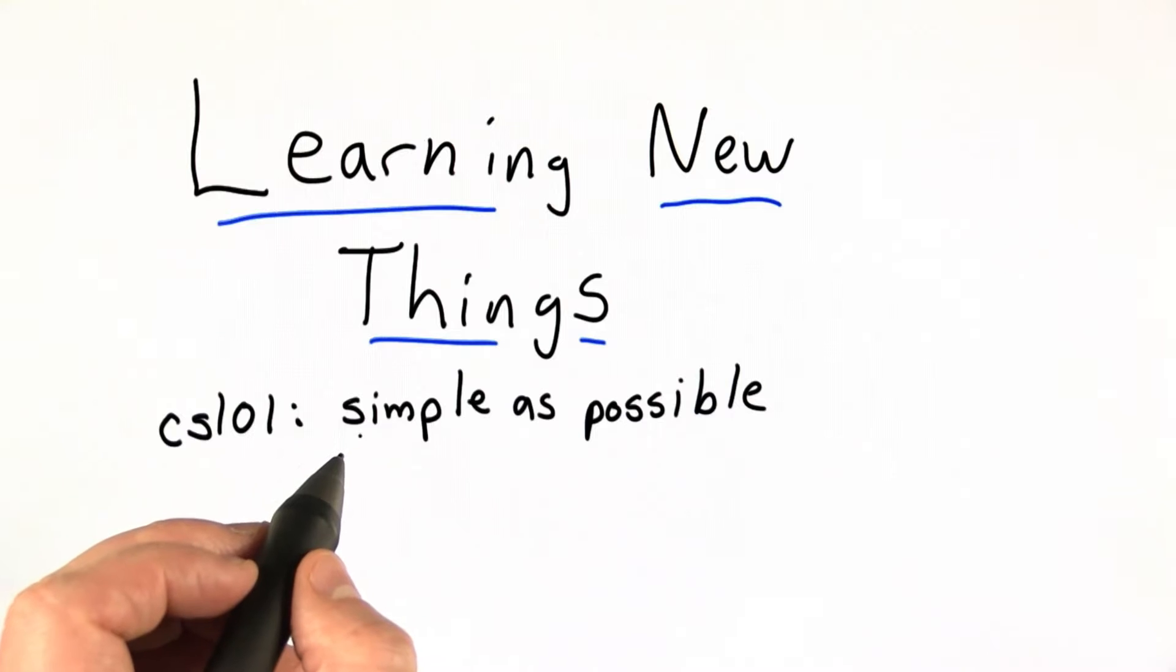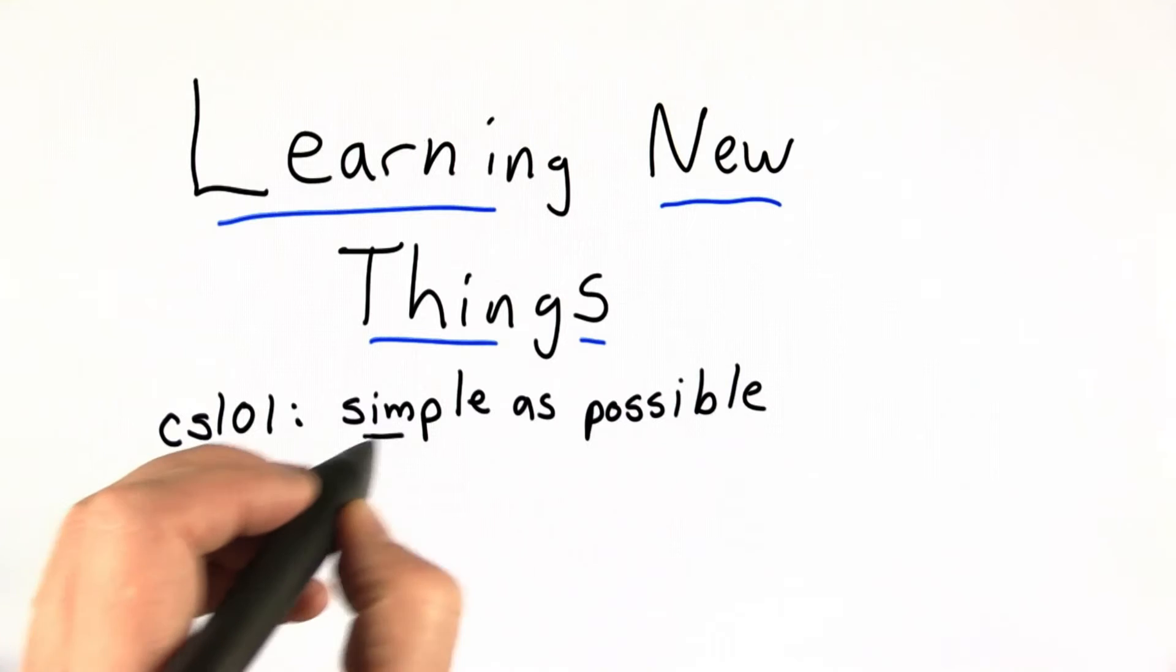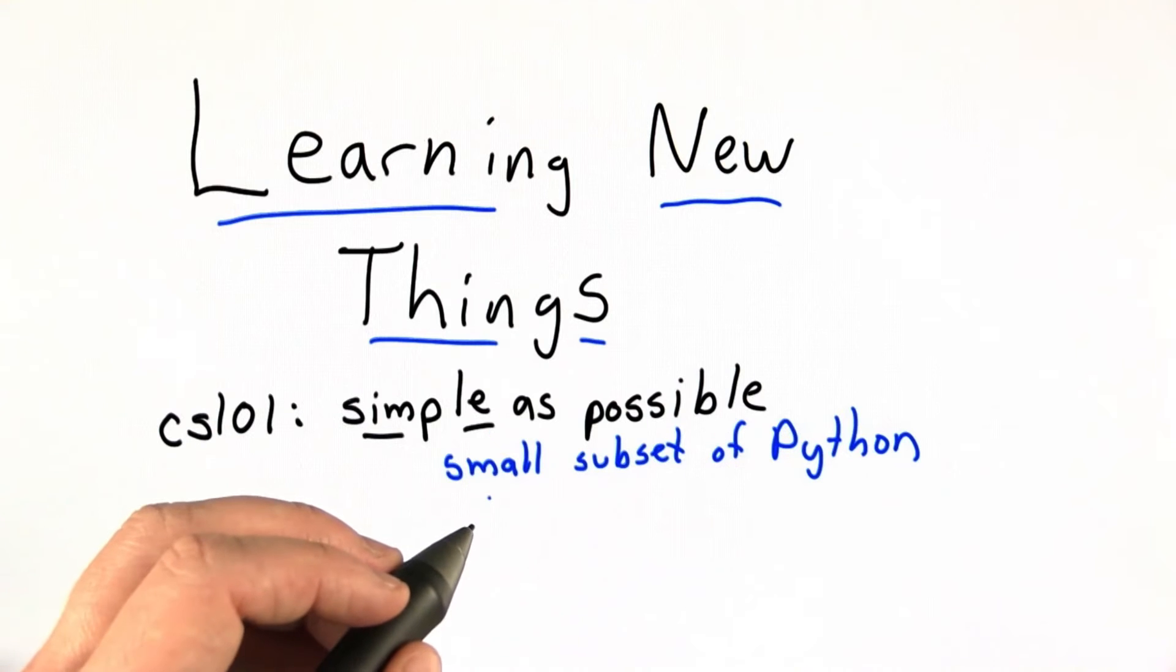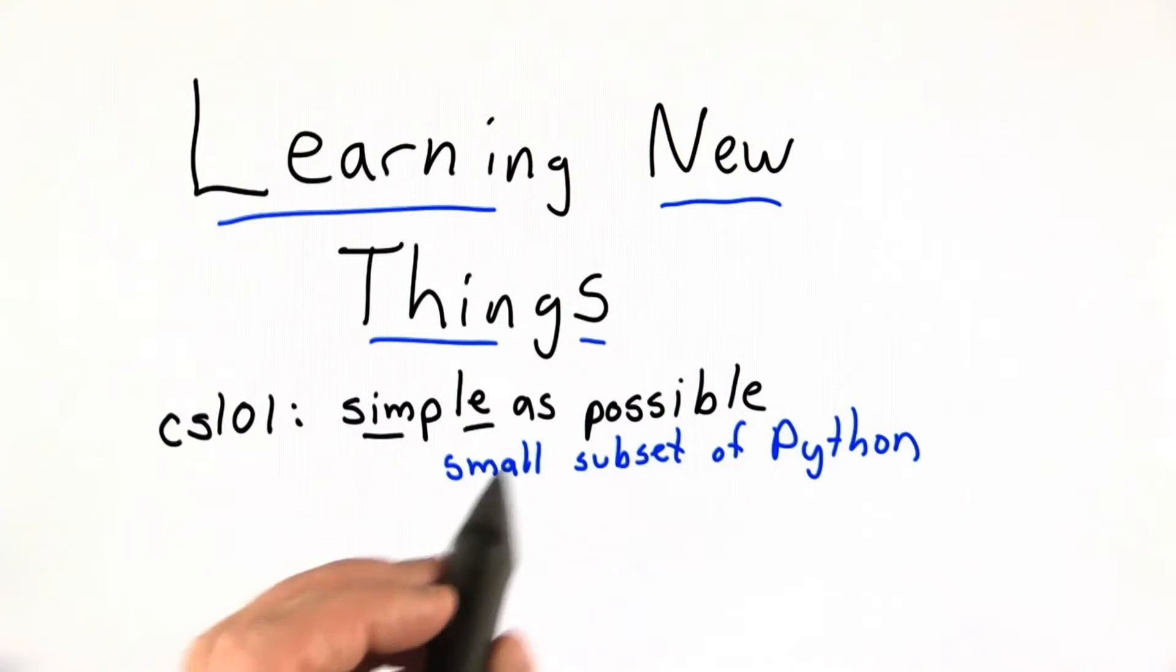In CS101, I tried to keep things as simple as possible using only a very small subset of Python. The reason for this was to focus on learning new concepts in computer science rather than learning lots and lots of different Python constructs.